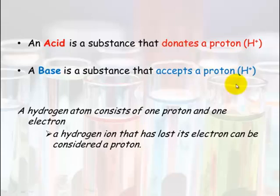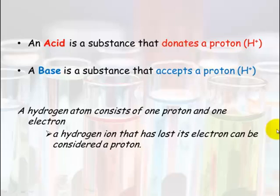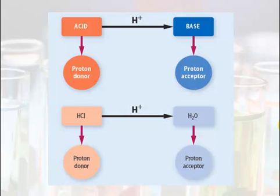Going back to the hydrogen ion for a minute: a hydrogen atom consists of one proton and one electron. Thus a hydrogen ion that has lost its electron can be considered a proton. Remember, generally there are no neutrons involved in hydrogen.